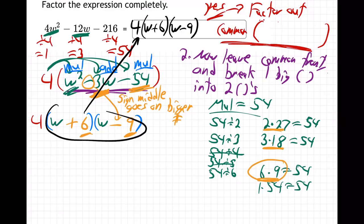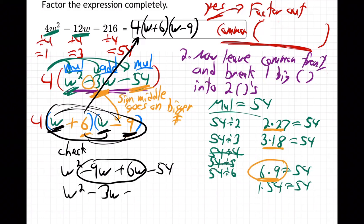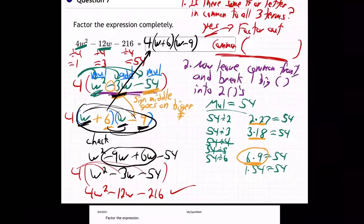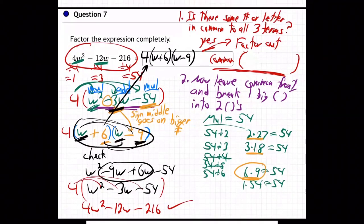Let's check this part for fun. The w distributes to both terms: w squared minus nine w, then the six distributes to both, giving plus six w minus 54. The two middle terms combine to make minus three w, which is exactly right. Then put the four back in front — four times each term — and you get four w squared minus 12w minus 216, which goes all the way back to the very beginning. It's correct.